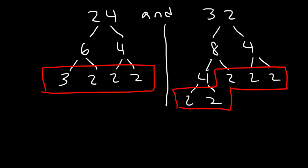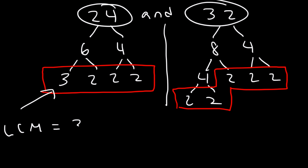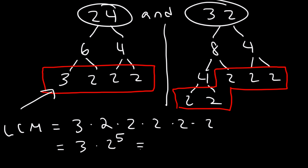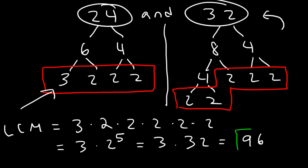How many 3s should we use to find the LCM? The most number of 3s found in either number is just one 3, so we use that. What is the most number of 2s found in one single number? On the left (24) we have three 2s, and on the right (32) we have five 2s, so we use five 2s. Five 2s is 2 to the 5th power, which equals 32. So the LCM is 3 times 32: 3 times 30 is 90, 3 times 2 is 6, giving us 96.